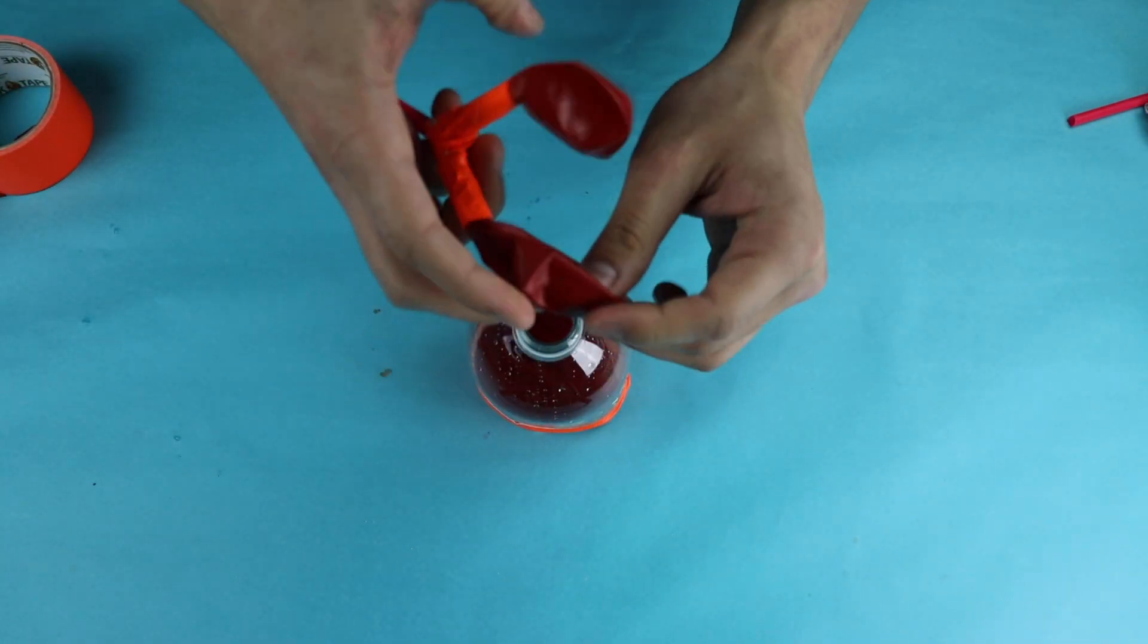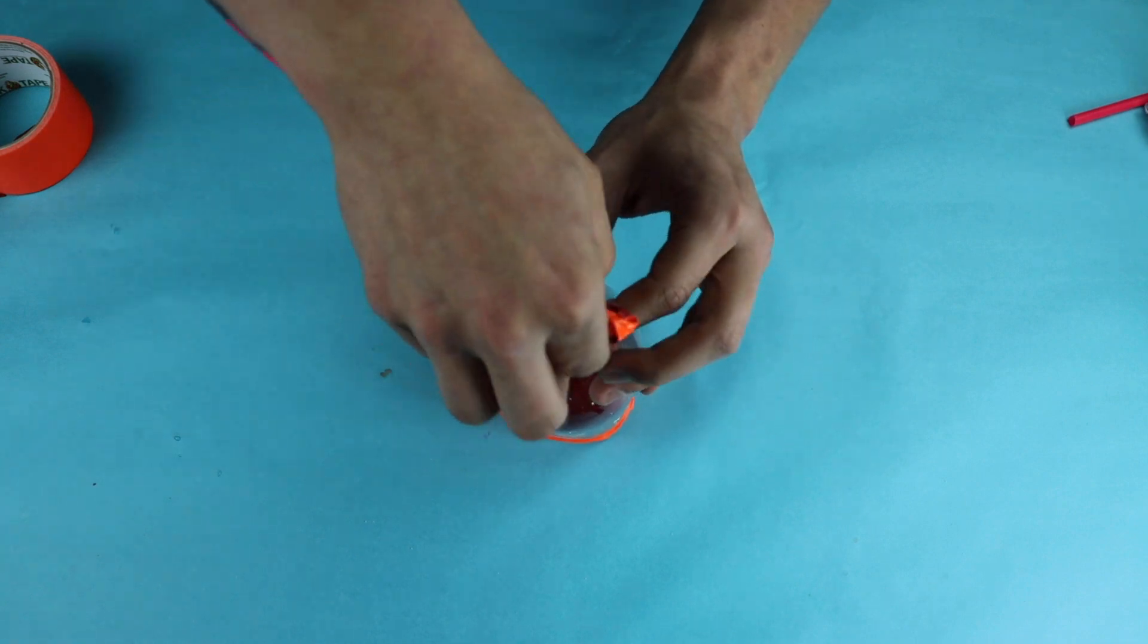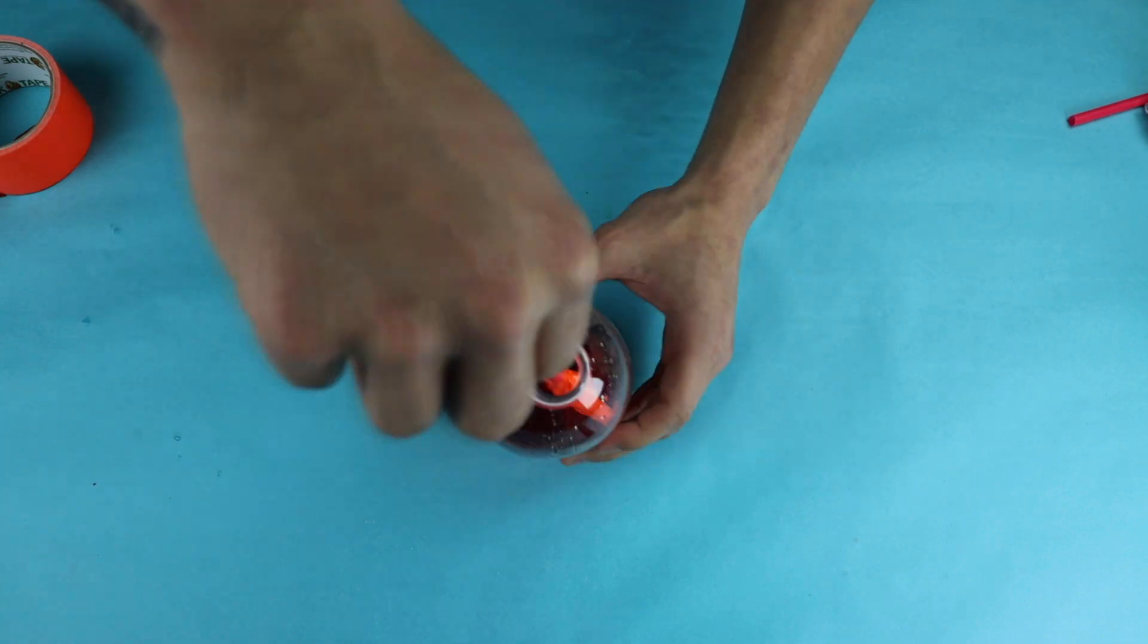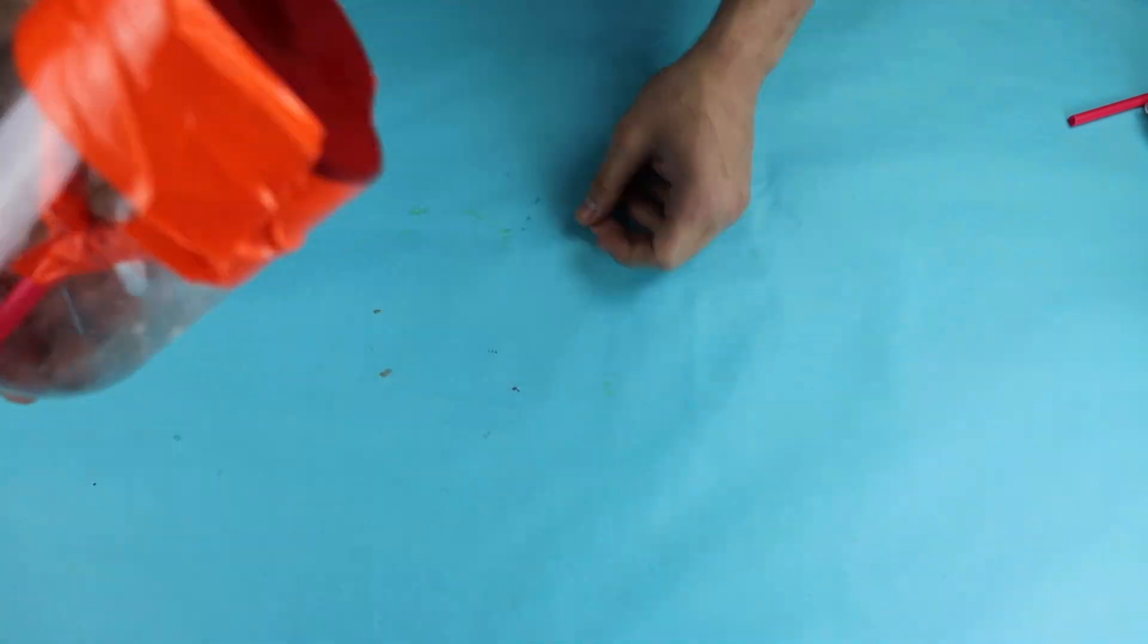Step ten, for this step, you're going to want to take your creation and try to stuff it through the hole in the bottle. But make sure you're being careful so you do not break the thing you made.